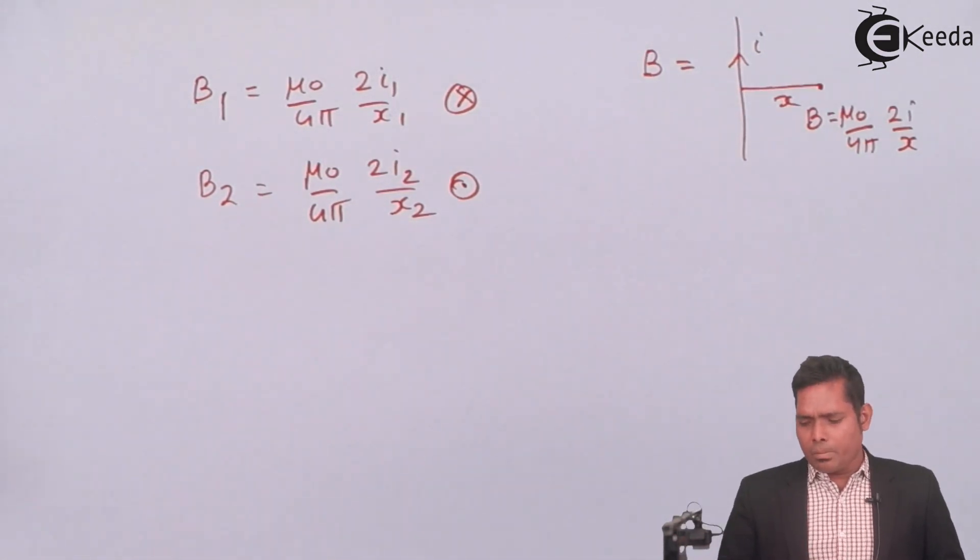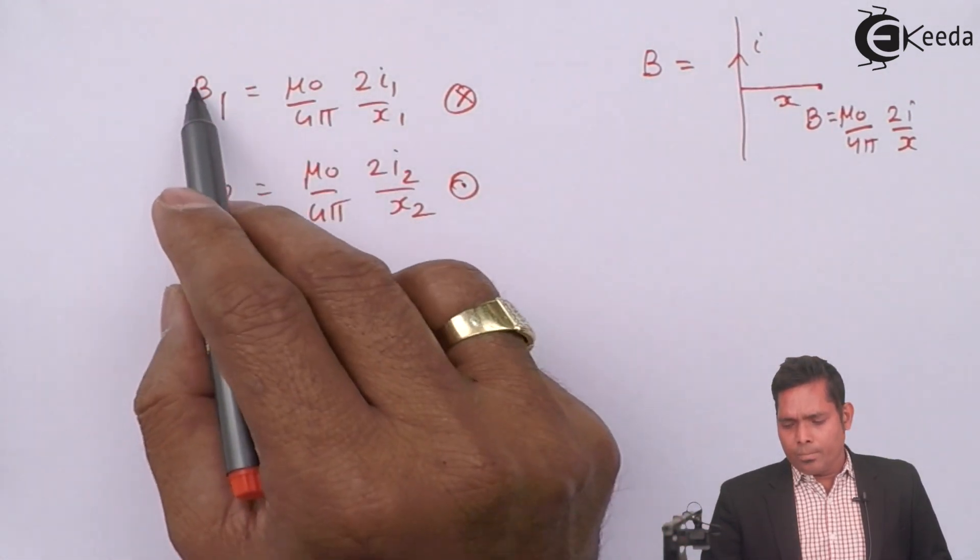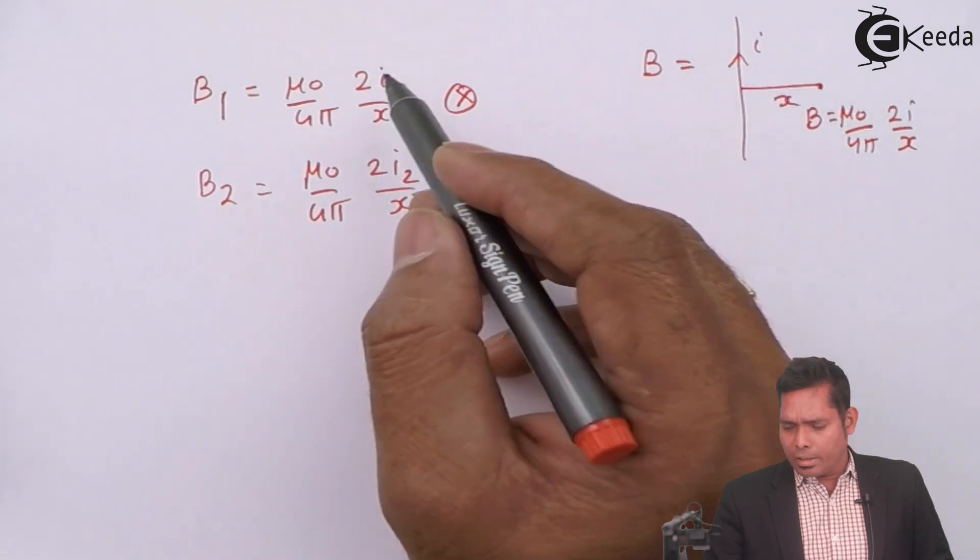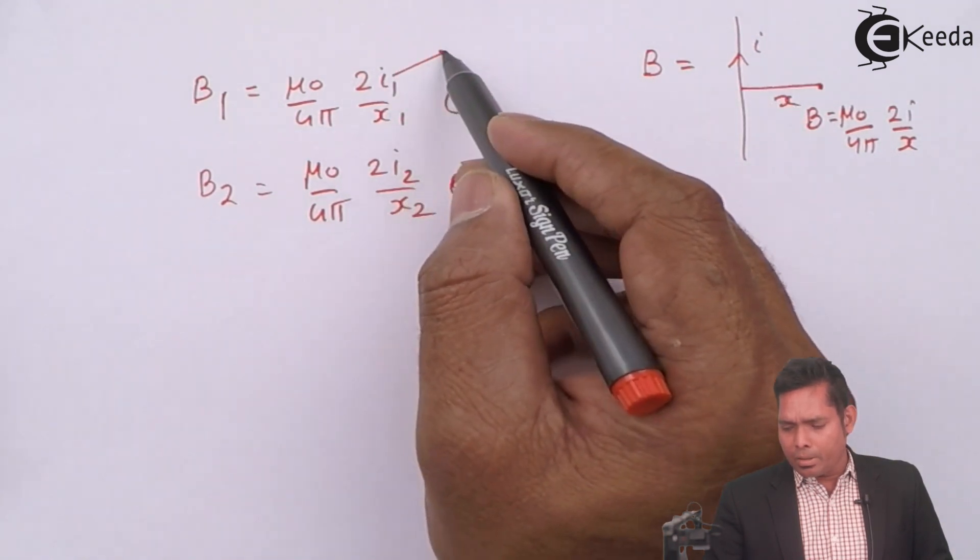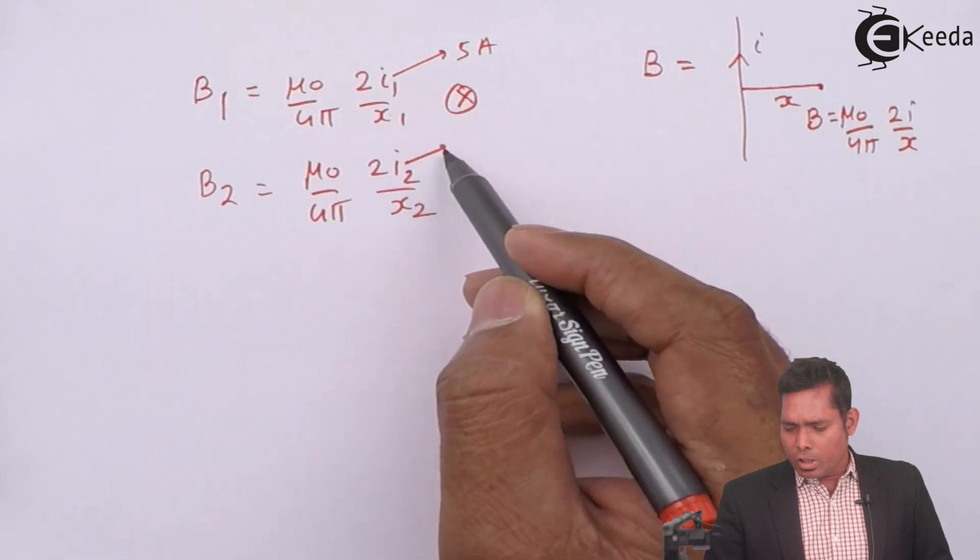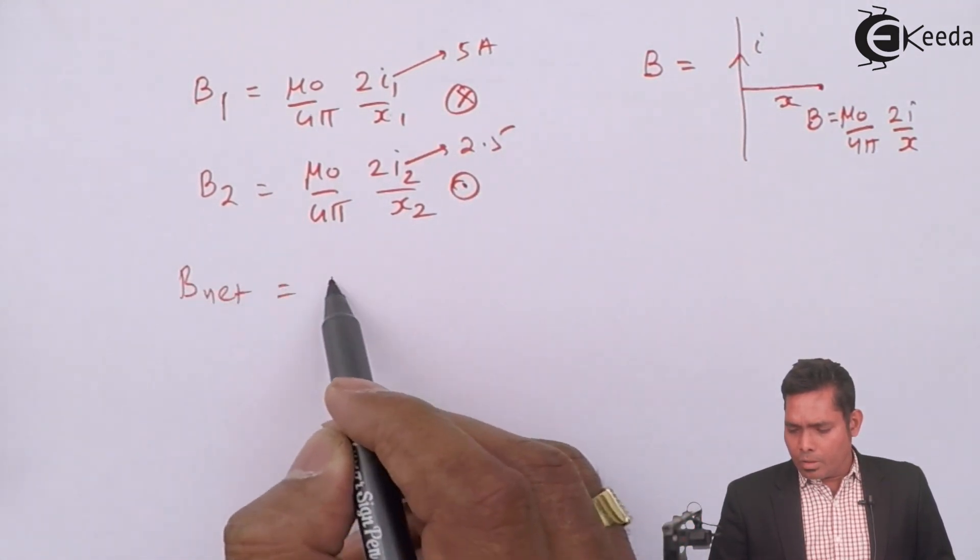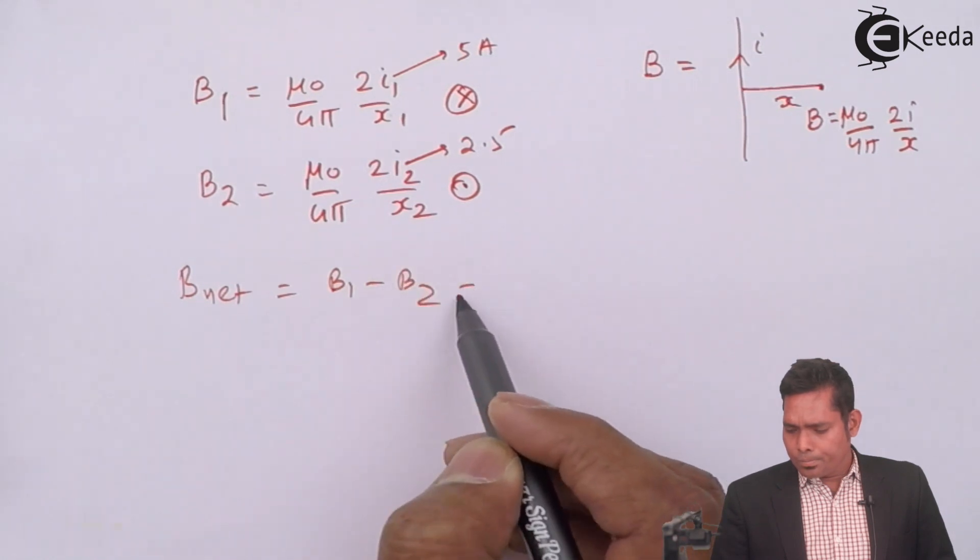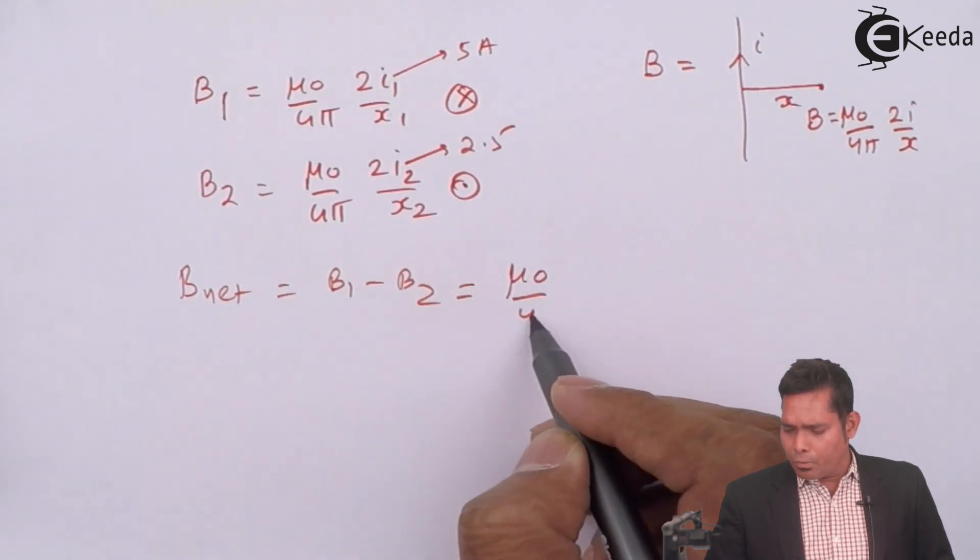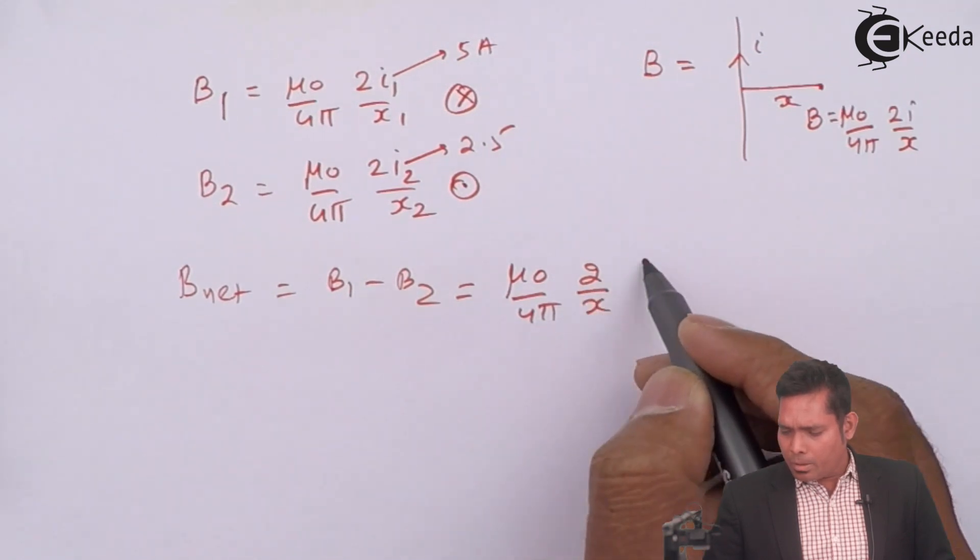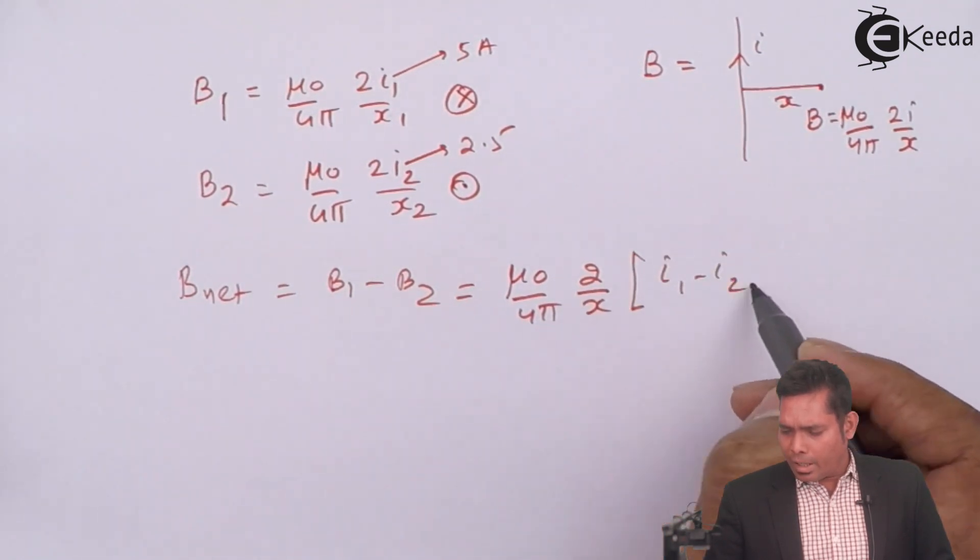The magnetic induction will be obviously in the sense of the wire which carries higher current and the conductor carrying higher current is 5 ampere. This is 5 ampere, this is 2.5 ampere. The net B net will be B1 minus B2 which is mu 0 upon 4 pi 2 common x common i1 minus i2.